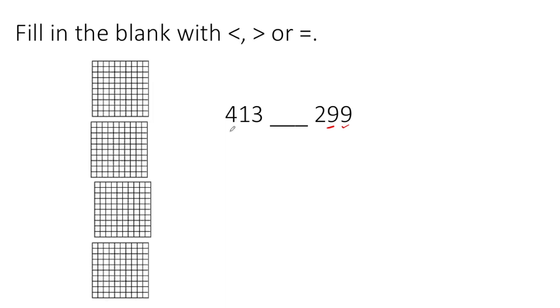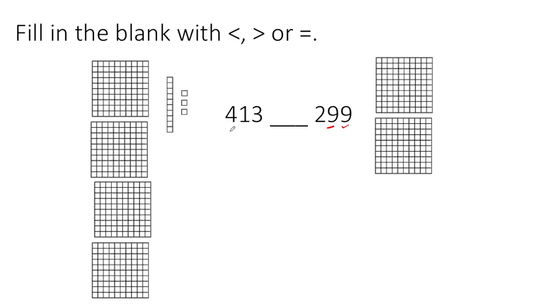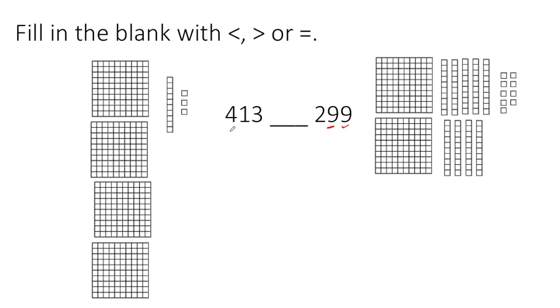Four hundreds, one ten, three ones. And then on the other side, two hundreds, nine tens, and nine ones. We can look and see that even though this number has so many tens and ones.